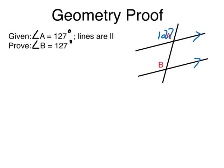They have names. All right, and I know that corresponding angles in parallel lines equal each other. Well, there, I just did the mental proof showing that B is 127.